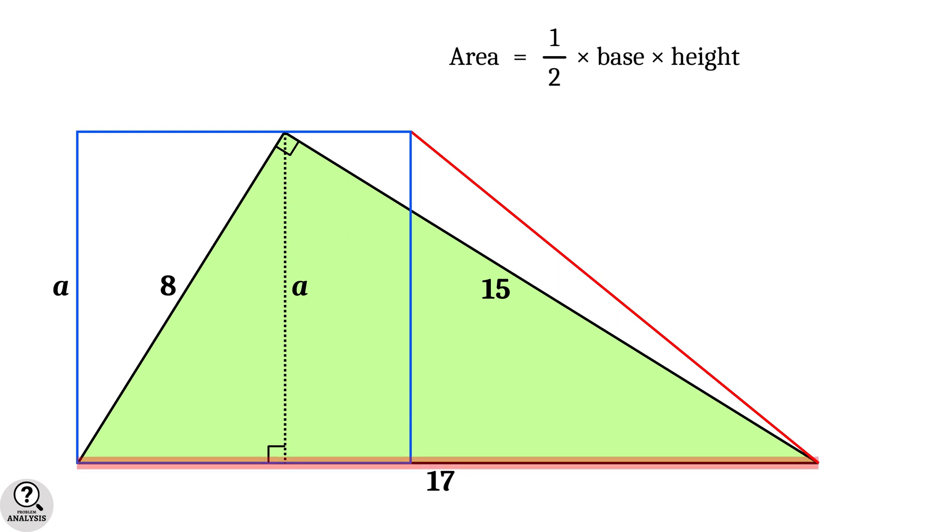Here, base is the hypotenuse, which is equal to 17 units. And height is equal to A. That is, area is equal to half into 17 into A, equal to 17A divided by 2.